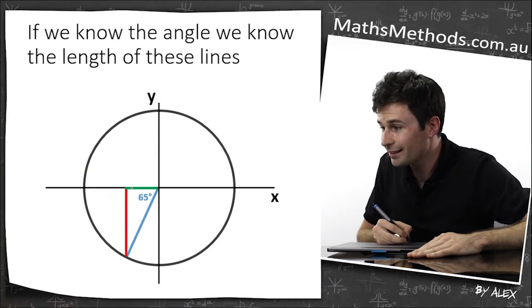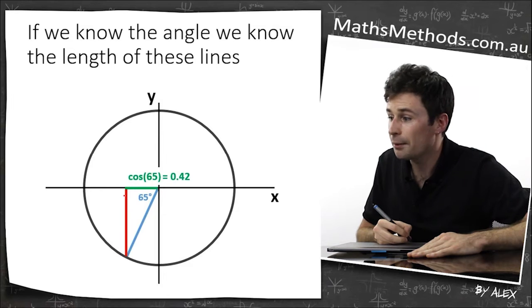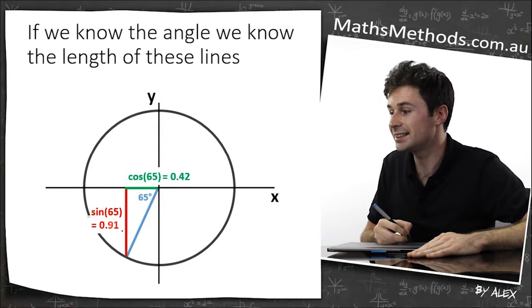If we've got something like this, we know that the length of this line is cos 65, and we know the length of this red line is sine 65.